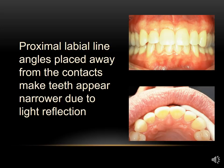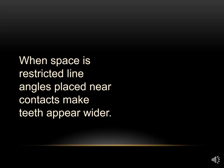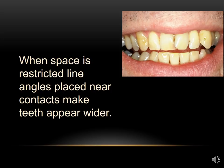Proximal labial line angles placed away from the contacts make teeth appear narrower due to light reflection. In a case where space is restricted, the line angles placed near the contacts make the teeth appear wider.